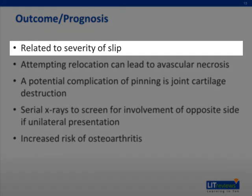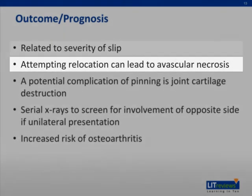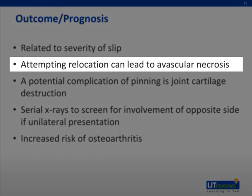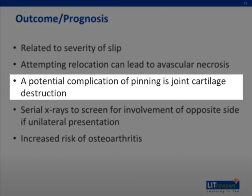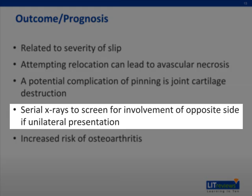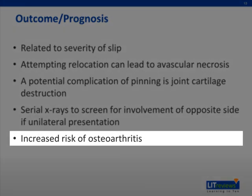The outcome of SCFE is related to the severity of the slip. Attempting relocation can lead to avascular necrosis due to disruption of the blood supply to the bone, which leads to cellular death and ischemic necrosis. Pinning, while part of the management, can lead to destruction of the cartilage overlying the femoral head. If the patient has unilateral SCFE, serial X-rays are recommended to screen for involvement of the opposite side. Patients with SCFE have an increased risk for developing osteoarthritis in the affected hip over time.